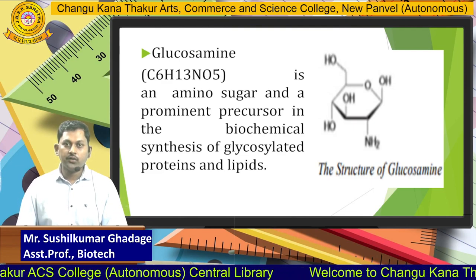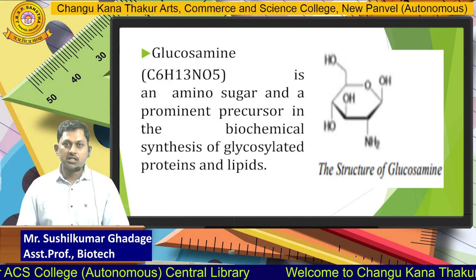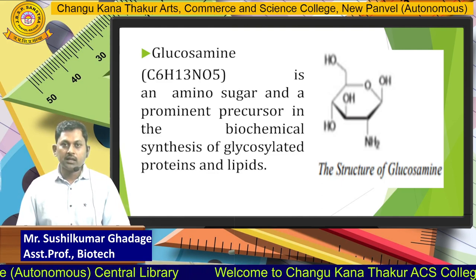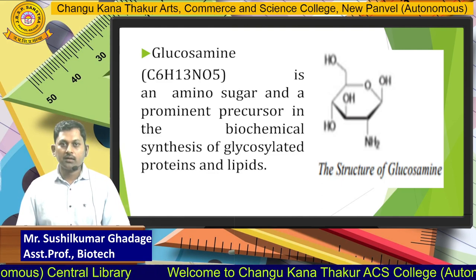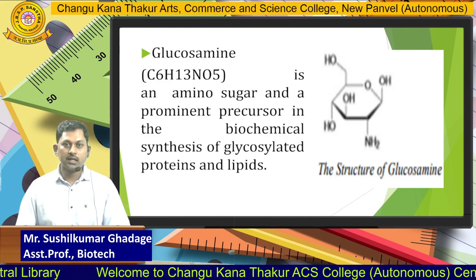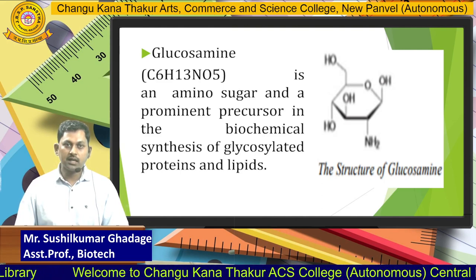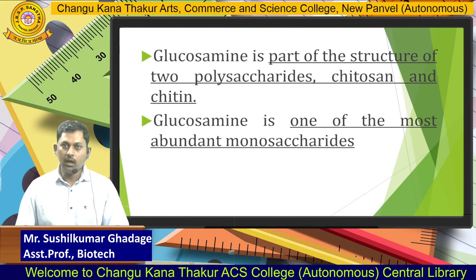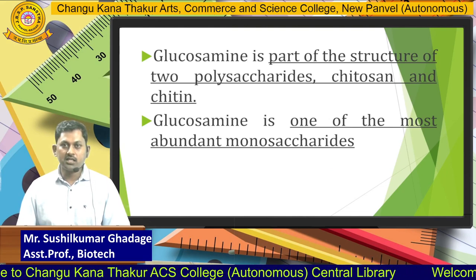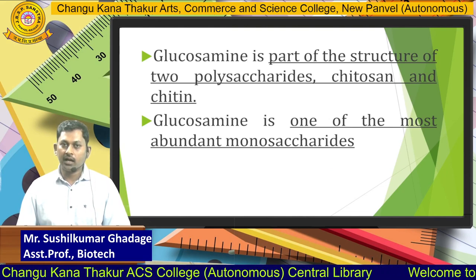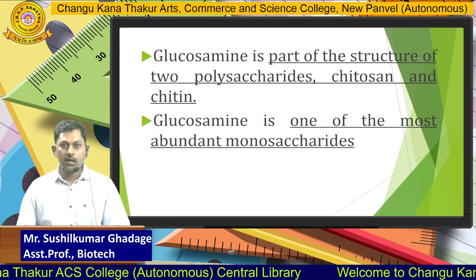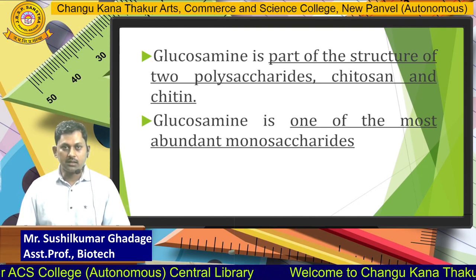Regarding the structure of glucosamine, its molecular formula is C6H13NO5. It is an amino sugar and a prominent precursor in the biochemical synthesis of glycosylated proteins and lipids. It is also part of the structure of two polysaccharides — chitosan and chitin — and is one of the most abundant monosaccharides.